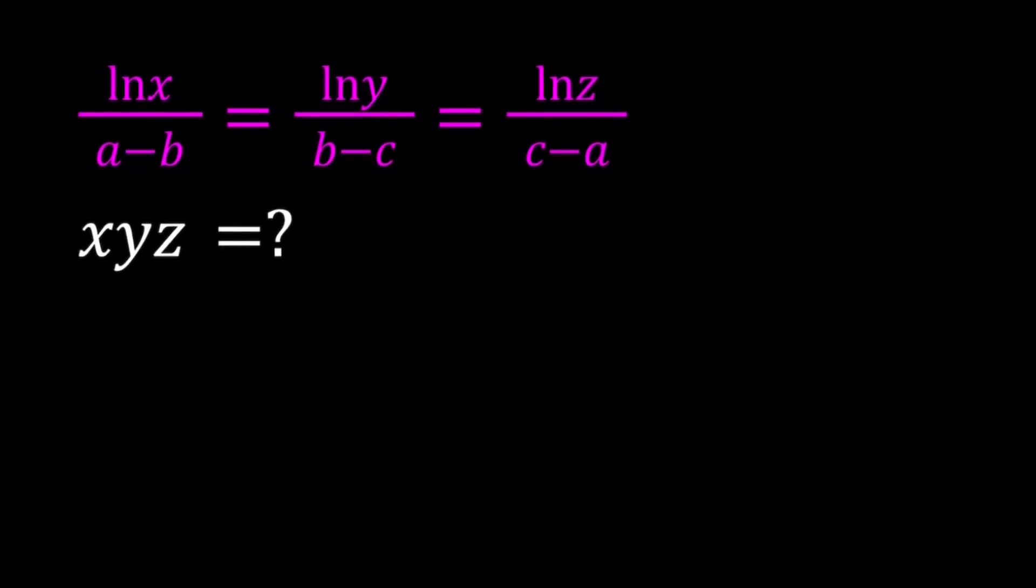Hello everyone. In this video, we're going to be dealing with a logarithmic system. We have ln x over a minus b divided by ln y over b minus c, and that is equal to ln z over c minus a. a, b, c are constants, and they are all different. And we're going to be evaluating the expression xyz.